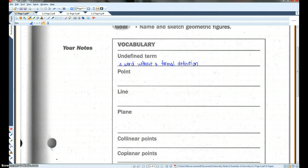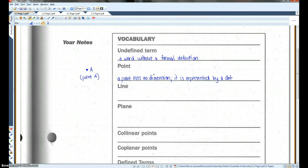All right? A point has no dimension. It's represented usually by a dot. So for example, this would be point A. There's a dot and there's a label next to it.